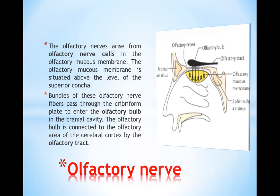So, let's start with the first one, which is the olfactory nerve. The olfactory nerve arises from the olfactory epithelium or olfactory mucosa, which is situated above the superior nasal concha within the nasal cavity. Here we see the superior nasal concha, here we have olfactory epithelium, and several bundles of nerve fibers will pass through the cribriform plate of the ethmoid bone.